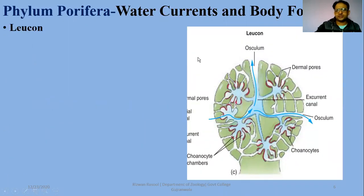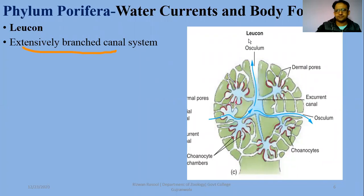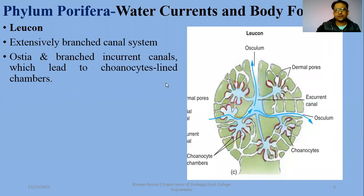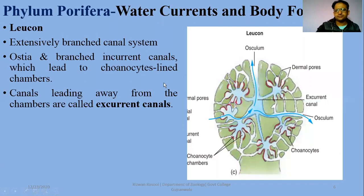The third body form, which is highly branched, is the Leucon type. Leucon sponges have an extensively branched canal system. They have ostia and branched incurrent canals which lead to choanocyte-lined chambers. The lining of flagellated cells is on the inner side of these chambers. The term dermal pores is also used for the inward openings in leucon sponges.